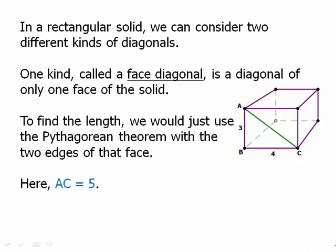In particular, here we have a right angle three and four. We want the hypotenuse. It has to be a three, four, five triangle. So AC equals five.